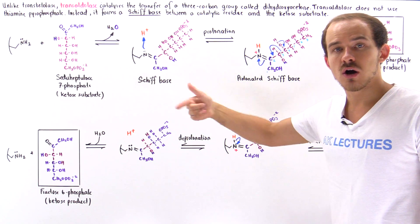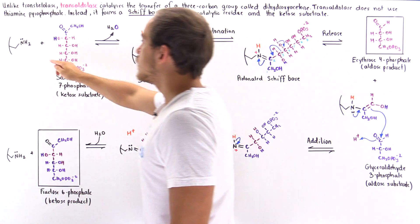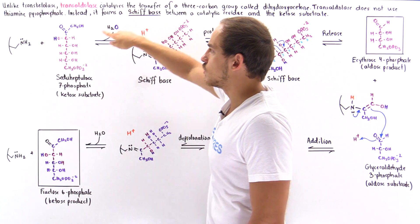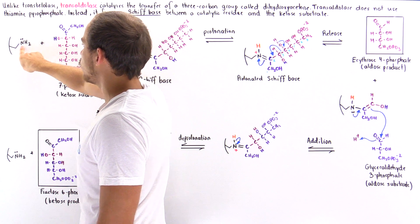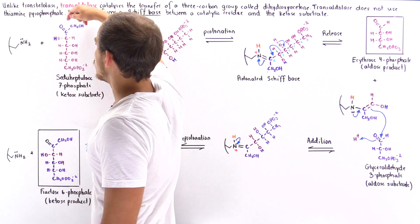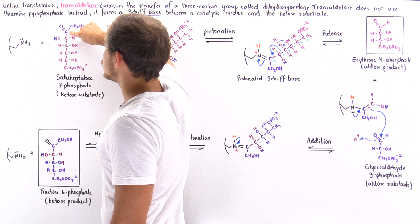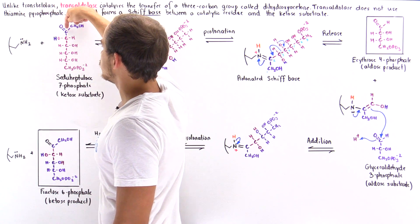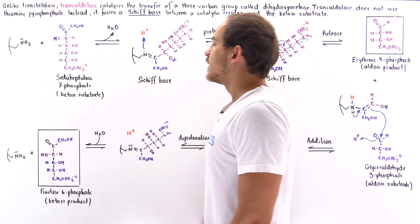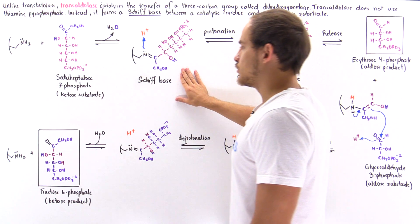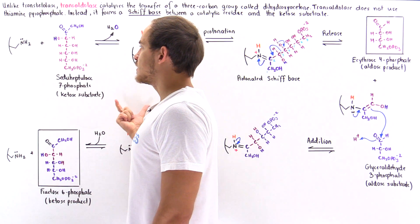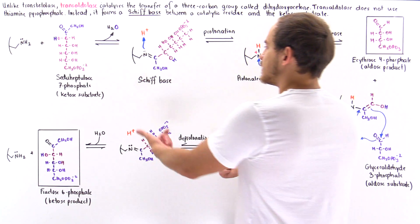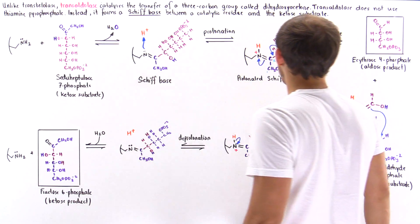In the process, we kick off a water molecule — these two H ions and this oxygen combine to form water — and we form a double bond between this nitrogen and this carbon. So this is carbon 1, 2, 3, 4, 5, 6, and 7. We form a bond between the nitrogen and carbon number 2 on the incoming ketose substrate molecule. This is what we call a Schiff base — a connection between the enzyme and the substrate — making this an enzyme-substrate intermediate molecule.